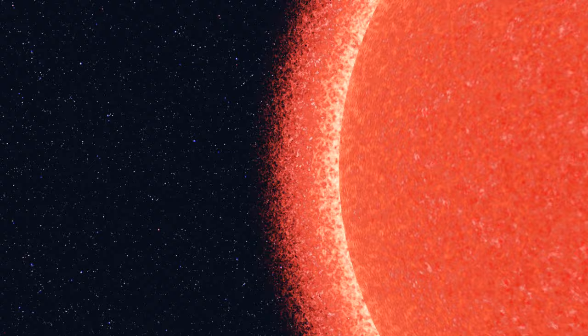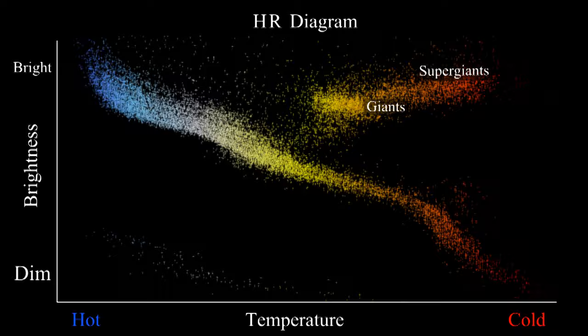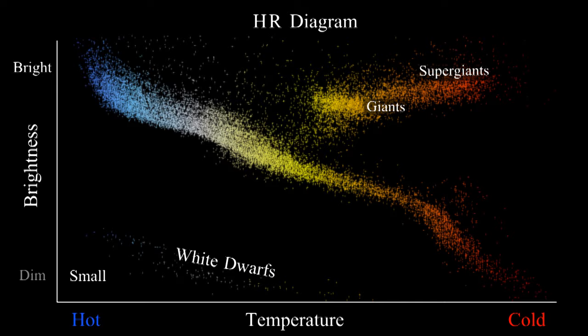In the opposite extreme, the bottom left corner of the diagram has stars that are very hot but very dim, which means they must be small. These are the dwarfs. This section is for white dwarfs, the remains of dead stars.